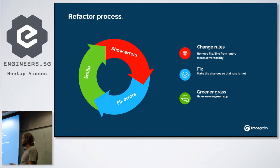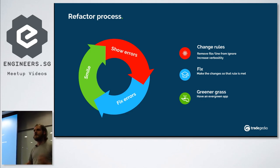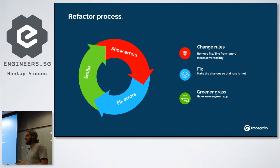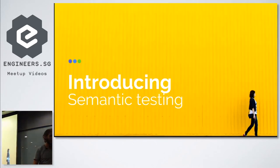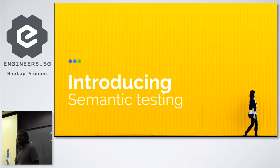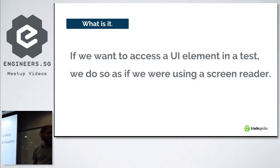In the case of linters like ESLint, you'd enable a rule, all your tests would break, and then you'd fix those areas or ignore parts of it to reach a working state. Now we get to introducing semantic testing.